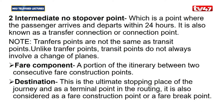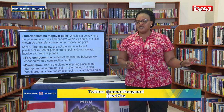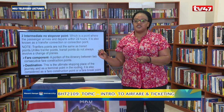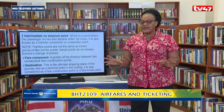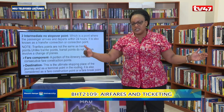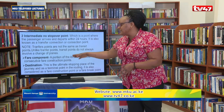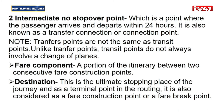There is also the fare component under the anatomy of a journey. A fare component is a portion of the itinerary between two consecutive fare construction points — from fare construction point A (origin) to fare construction point B (destination). Destination is the ultimate stopping place of the journey and as a terminal point in the routing, it is also considered as the fare construction point or fare breakpoint, where the fare actually ends.